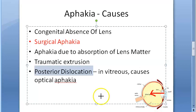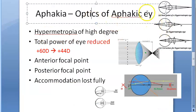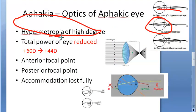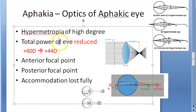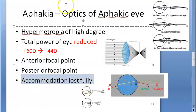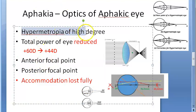Another cause is traumatic posterior dislocation of the lens into the vitreous. Regarding the optics of an aphakic eye, this is a very high degree of hypermetropia. The eye power gets reduced from 60 diopters to 44 diopters, anterior and posterior focal points are increased, and accommodation is lost fully.